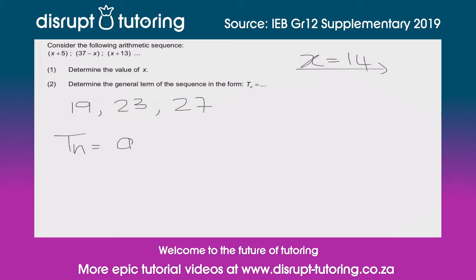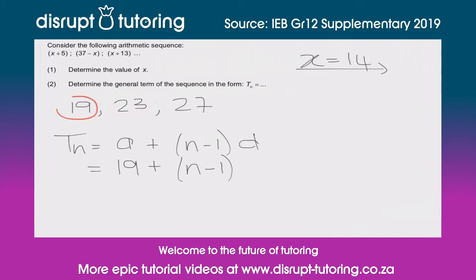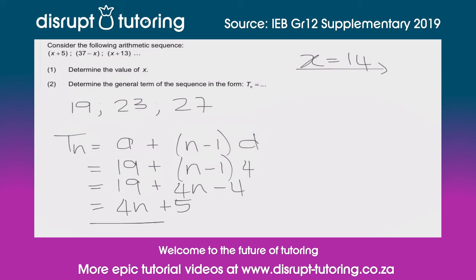Now let's generate the general term using our formula: Tn = a plus (n minus 1) times d. Here a, our first term, is 19. The common difference d is 23 minus 19, which equals 4. Multiplying out using the distributive law gives us 4n minus 4, and simplifying — 19 minus 4 gives us 15 — so the general term is Tn = 4n plus 15.